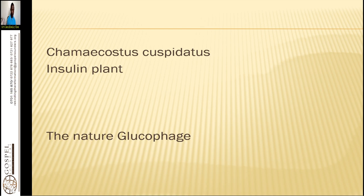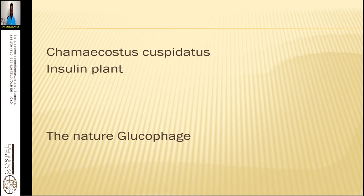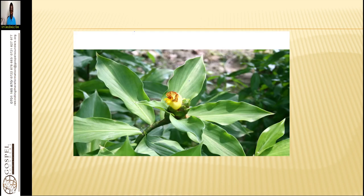Now, if you know about glucophage, it is a drug in the store used for reversing the high glycosis process or high blood sugar by lowering blood sugar levels. It inhibits the process of insulin production within the pancreas and sometimes causes a problem to the pancreatic beta cells. But this herb is specifically for boosting and lowering sugar that is very high — it is called the insulin plant.